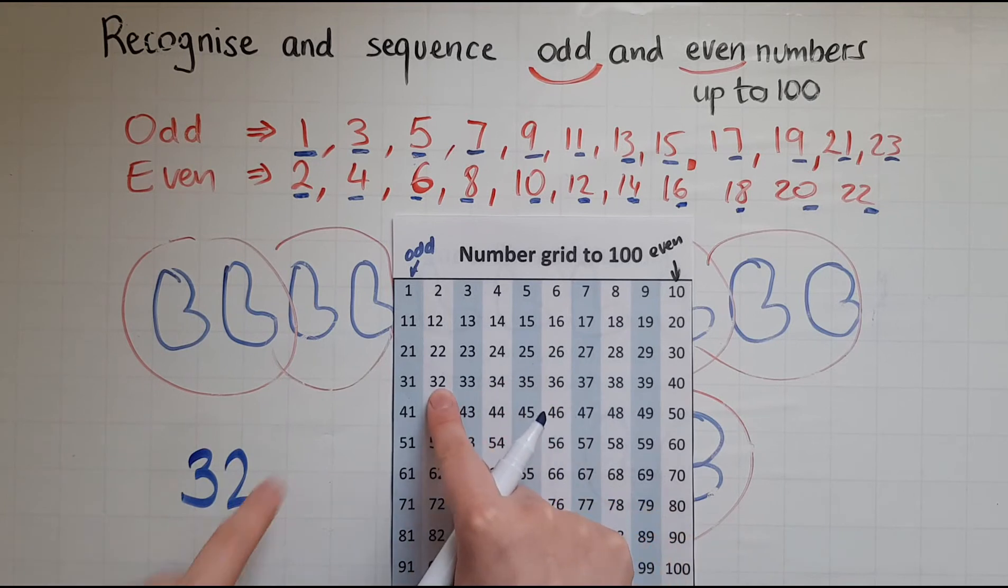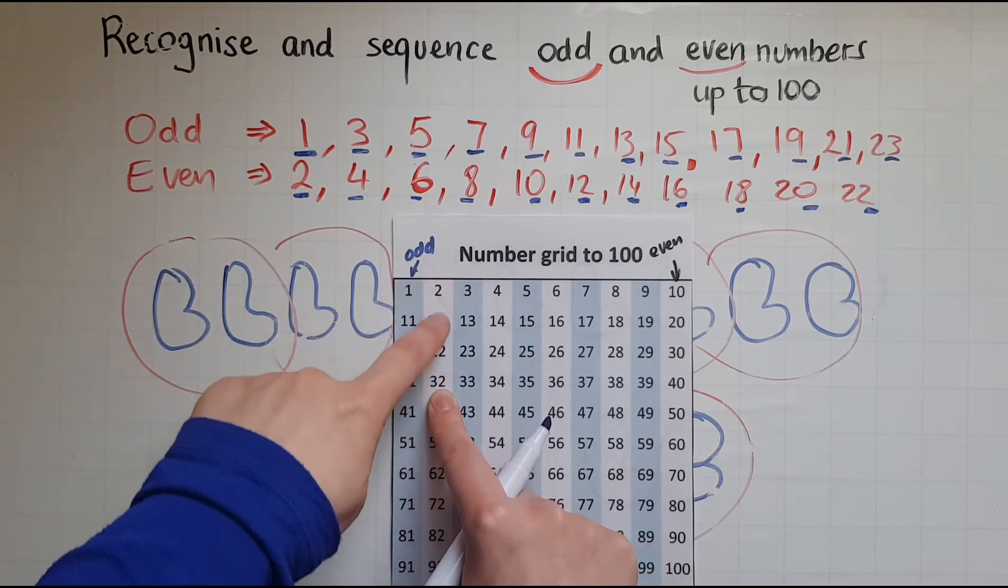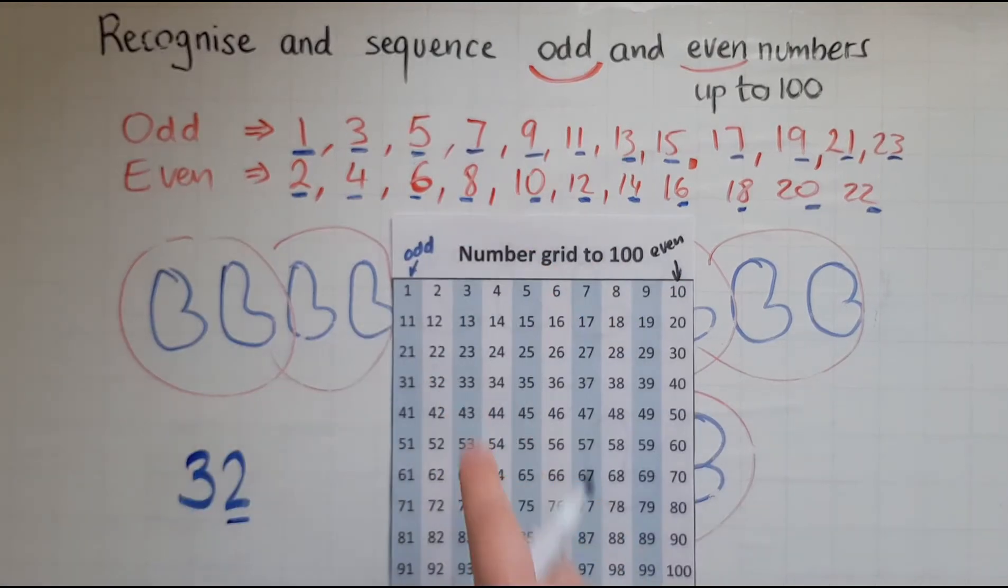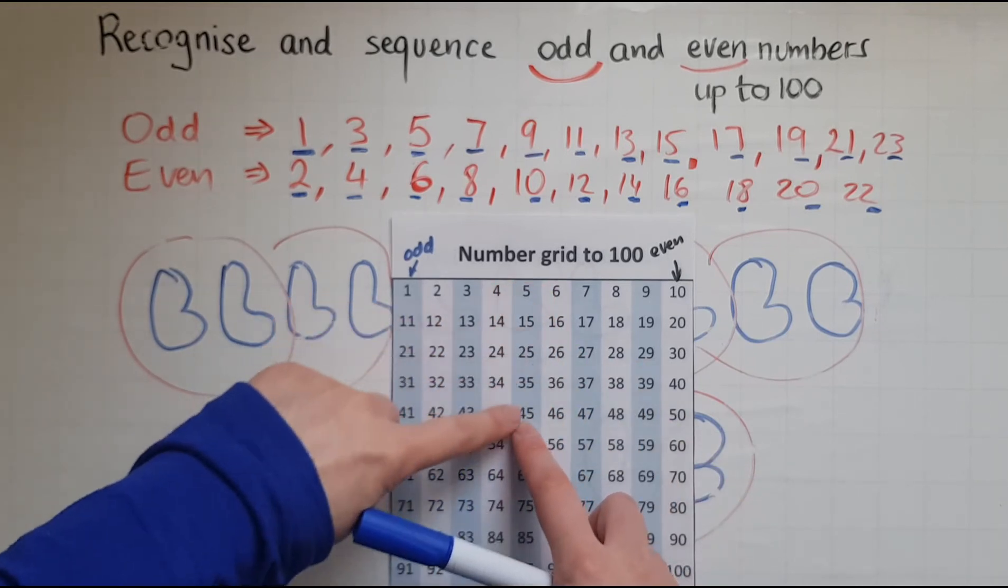Let's say number 45. Look at the unit. That's a 5. So 5 is odd. So number 45 is odd as well. Let's have a look. We've got 45 and it is odd.